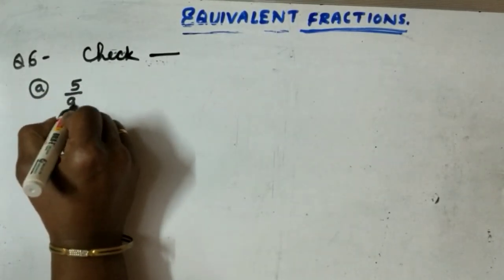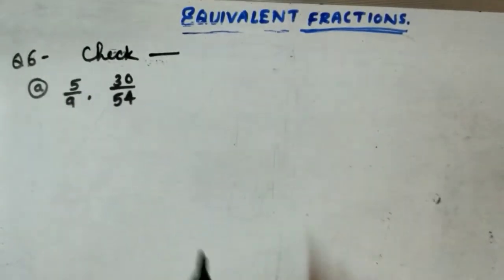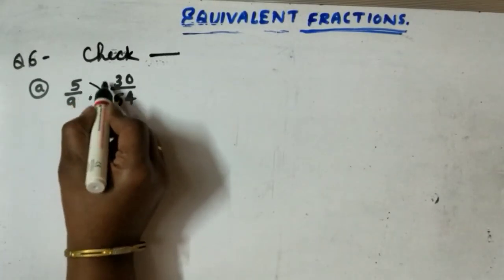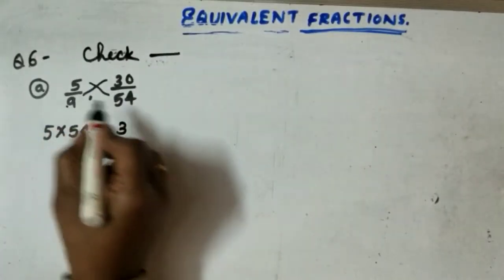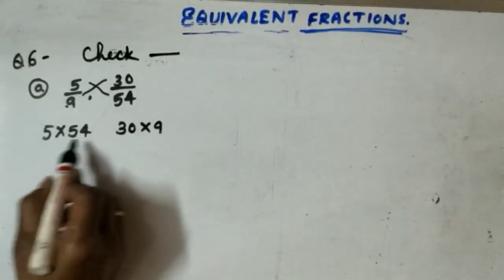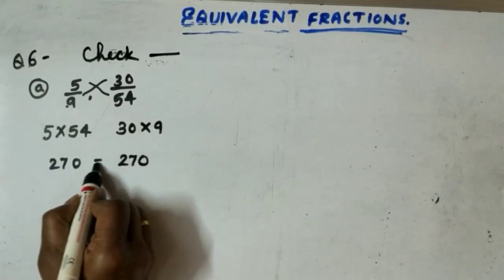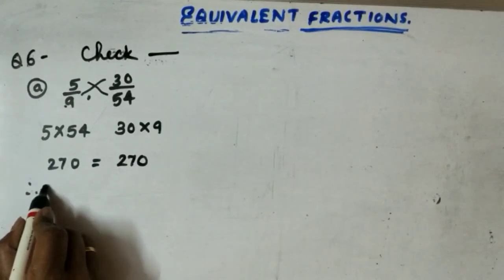A question: 5 by 9 and 30 by 54. Here children, for seeing whether the fractions are equivalent, in two ways we can do. Either you can make the denominator equal or you can do direct cross multiplication. First, by cross multiplication we will do. 5 into 54, 30 into 9. What answers we will get? 5 fifty fours are 270. Here 30 nines are 270. Both the fractions are equal. Therefore, the fractions are equivalent.